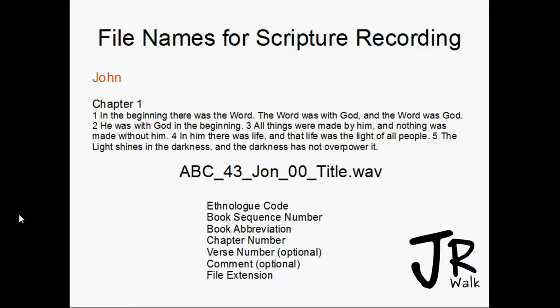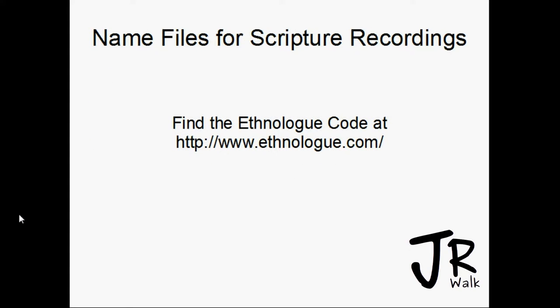The ABC is the ethnologue code — that's a three-letter code you will find at www.ethnologue.com. There is a three-letter code for every single language of the world, even minority languages. It helps sort all the languages together in a digital recorder, and if you give the file to somebody else, they can figure out what language it goes with. Use the ethnologue code; if you make up your own code it won't help you.